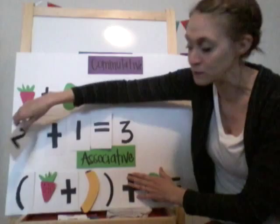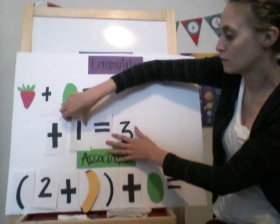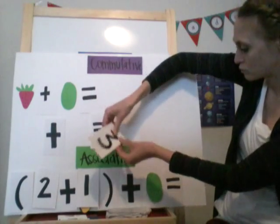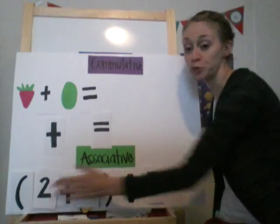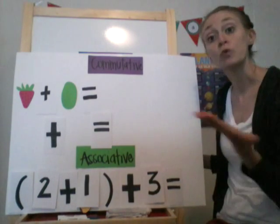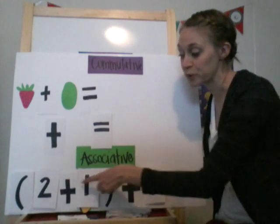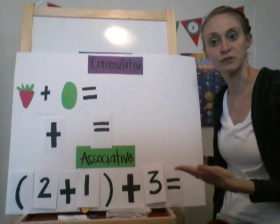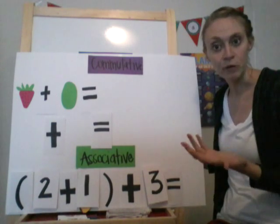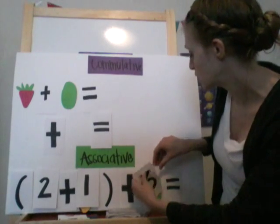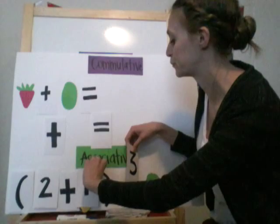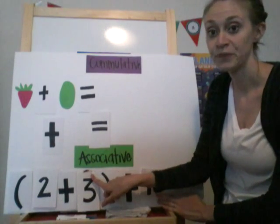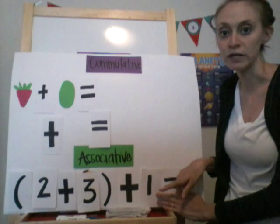Using these numbers: I have two plus one plus three. We start with what's in the parentheses first, so I'm going to add two plus one — that equals three. Then I add three more, and three plus three equals six. What if I wanted to do it in a different order? Let's switch these two numbers. I have two plus three, which equals five, plus one more — that equals six.